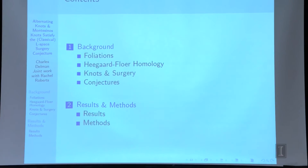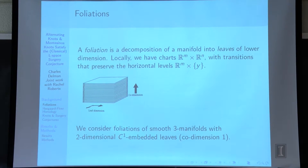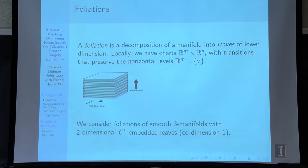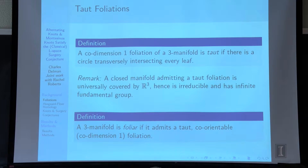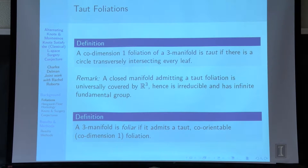I'll start with a little bit of background. A foliation is just a decomposition of a manifold into leaves of lower dimension. We are going to think of co-dimension 1 and leaf dimension 2 in a three-dimensional manifold. We're going to assume leaves are smooth, but the transverse direction doesn't need to be — just topological. A co-dimension 1 foliation of a three-manifold is taut if there's a circle transversely intersecting every leaf. Taut foliations have been studied for a long time, going back to Gabai and Thurston. A closed manifold that admits a taut foliation is covered by R³, so it has an infinite irreducible fundamental group.